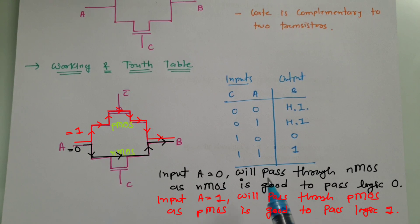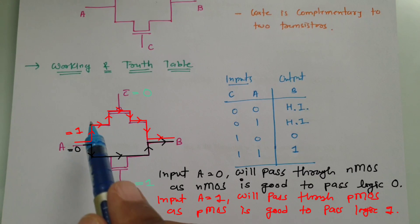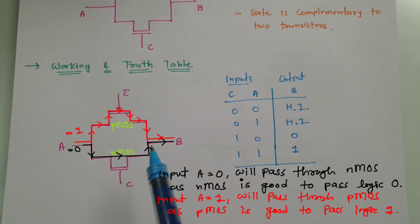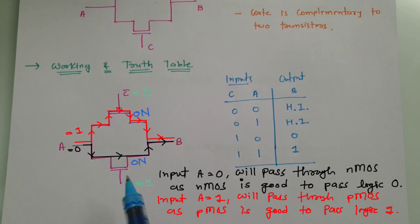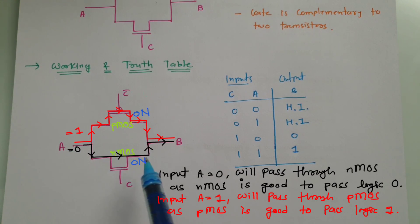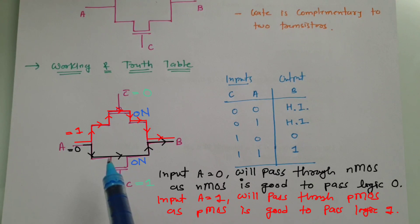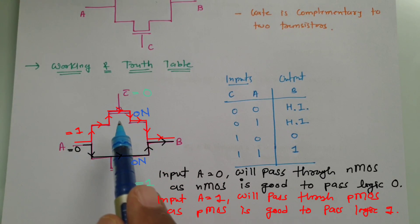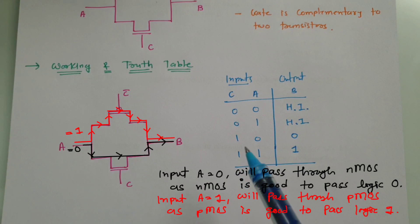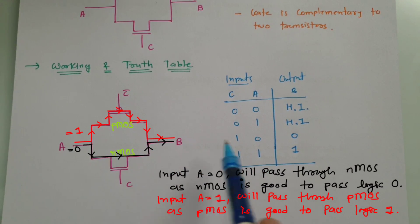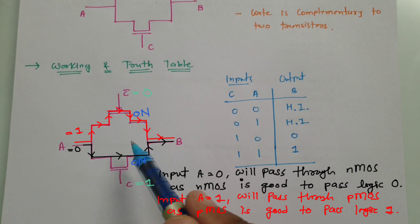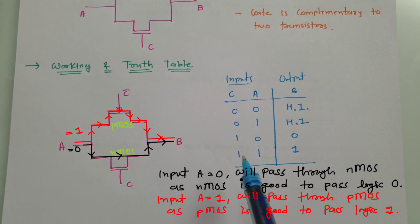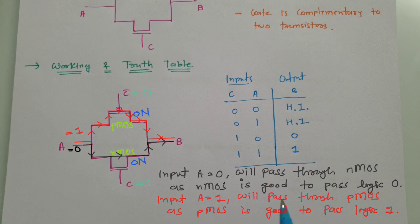One thing to understand — some students think that when C is 1, both NMOS and PMOS are on, so the input will go via both transistors. That is not correct. When C is 1, both are on, but if input is 0 then it passes through NMOS, as NMOS is good to pass logic 0, and when input is 1 it passes through PMOS, as PMOS is good to pass logic 1. That is how the working and truth table shows this CMOS transmission gate operating as a tri-state buffer.